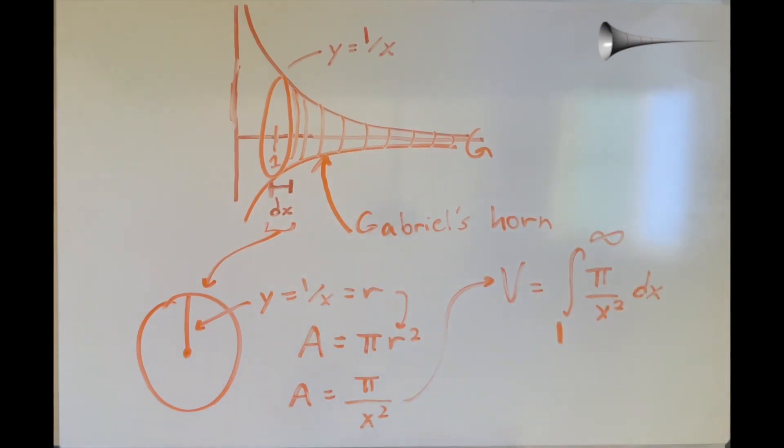Now, we just integrate this expression with respect to x using the limits 1 and infinity, and we find that the answer is pi, which means that the volume of Gabriel's horn, an infinitely long shape, is pi.